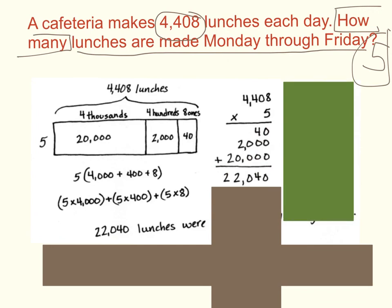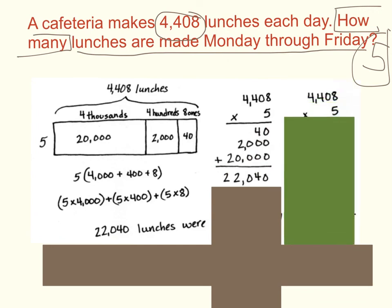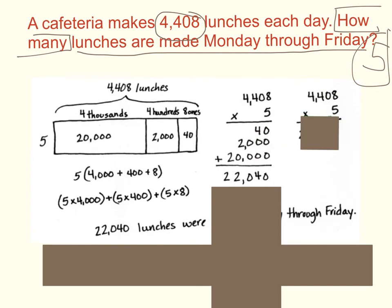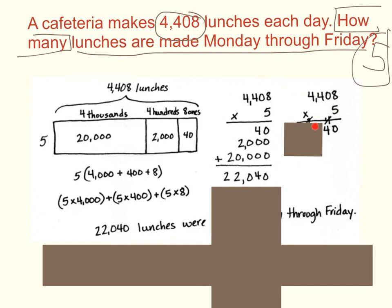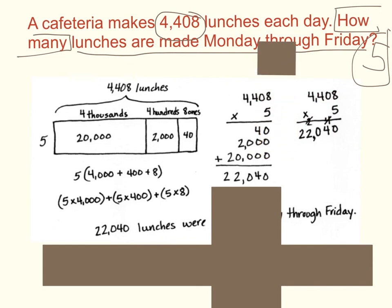Finally, let's look at our standard algorithm. 4,408 times 5. Start out in our ones place. 5 times 8 will give me 40. So we carry the 4 to the tens place and we put a 0 in the ones place. Next, we are doing 5 times 0 which would be 0, but then we have the 4 left over, so we have 4 tens in the tens place. Next, we move to our hundreds. 5 times 4 hundreds would be 20 hundreds. You can't put 20 in one place, so you carry the 2 to the thousands place and put a 0 in the hundreds place. And then finally, you multiply 5 times 4 which would be 20, then add your 2 and you're left with 22. So put a 2 in the thousands place and a 2 in the ten-thousands place. Our final product is 22,040.